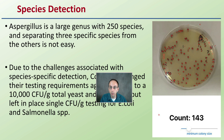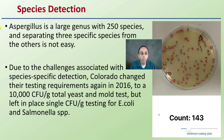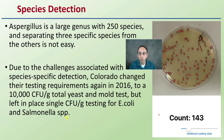Regarding species detection: with Aspergillus, it's a large genus with 250 species, and separating three specific species from the others is not easy. Due to challenges associated with species-specific detection, Colorado changed their testing requirements again in 2016 — after just updating them — to a 10,000 CFU per gram total yeast and mold test, but left in place single CFU testing for E. coli and Salmonella. What labs basically do is grow samples on a plate and count colonies per gram to determine whether a result is above or below the set threshold level.